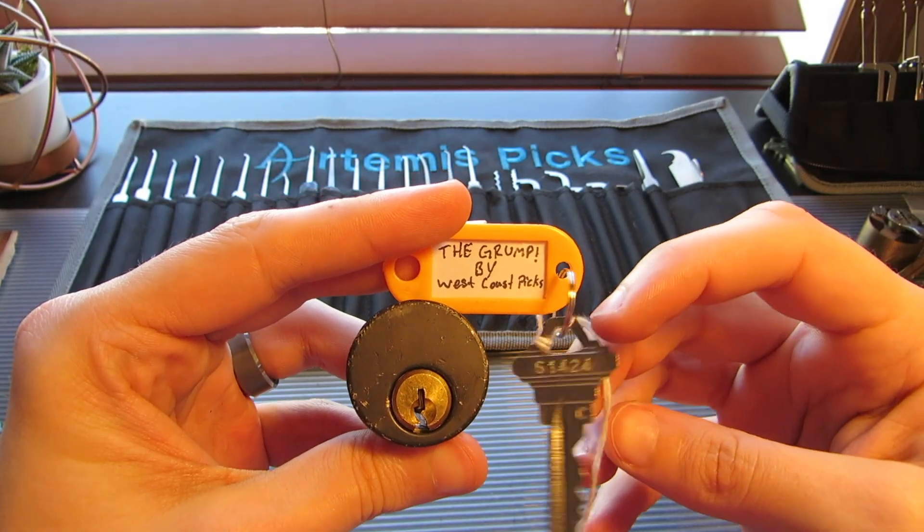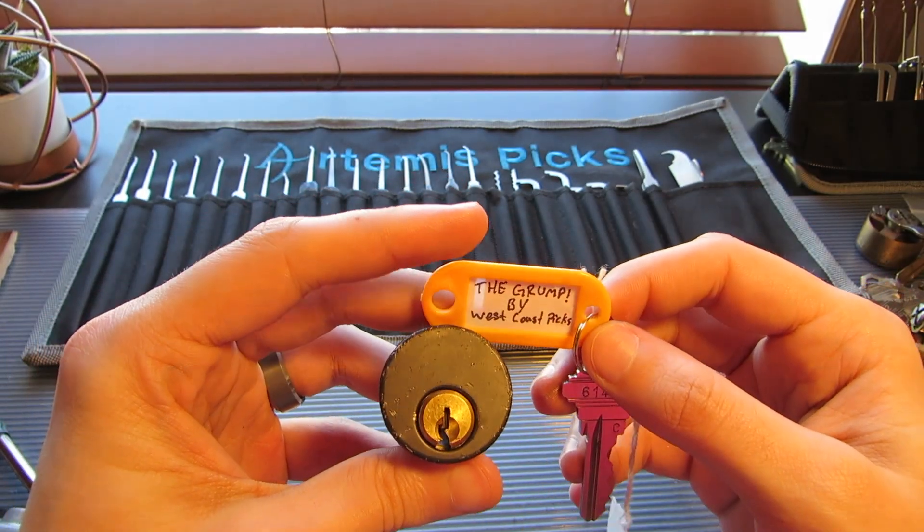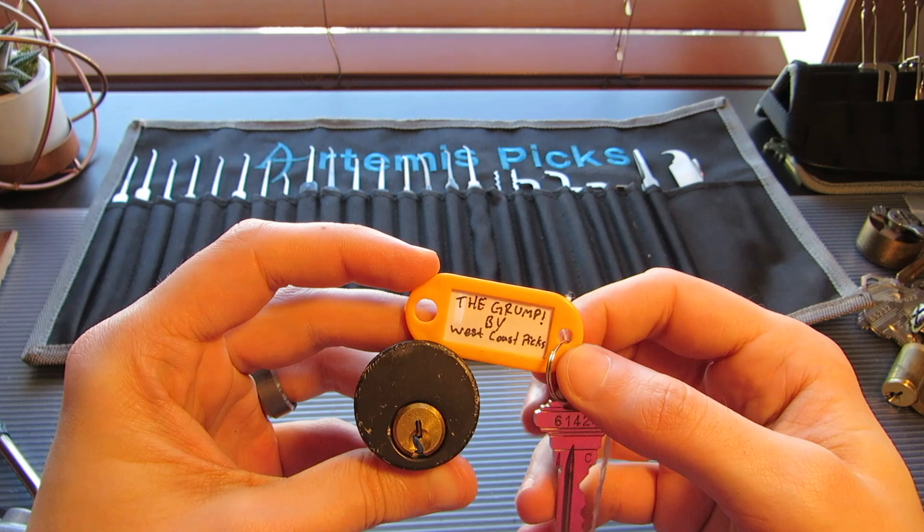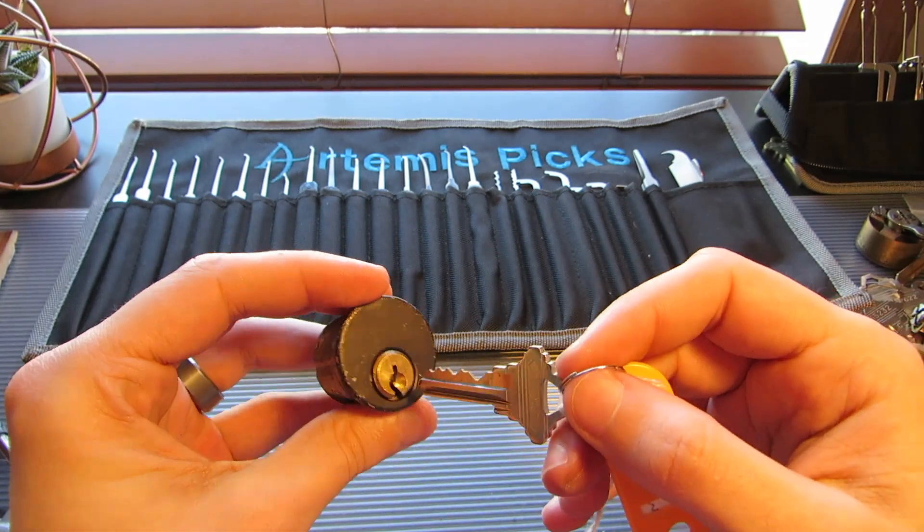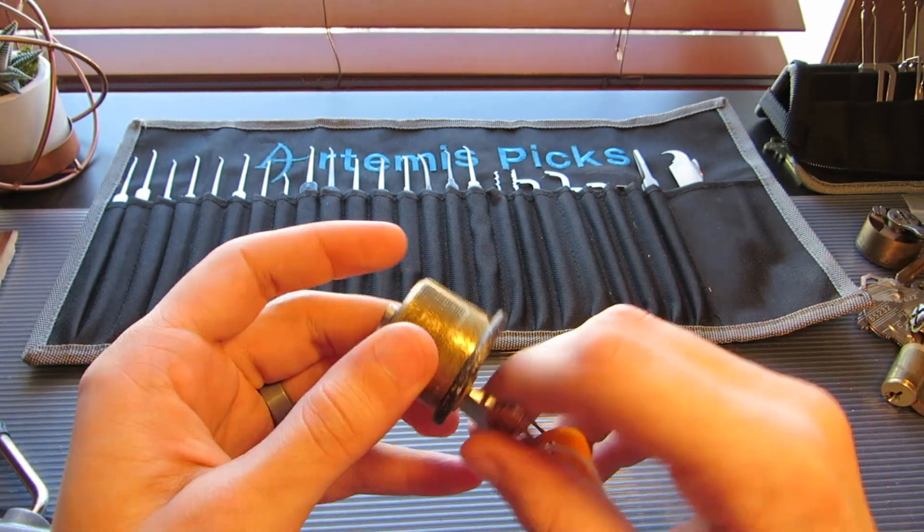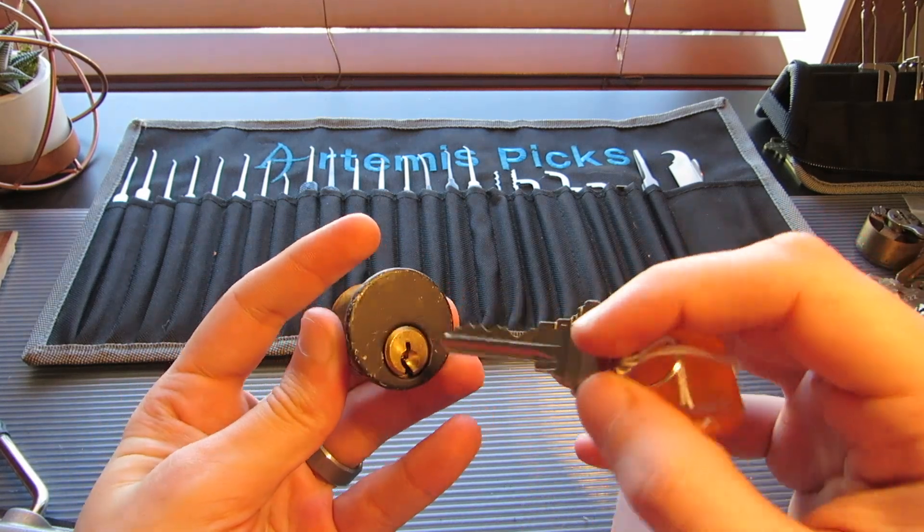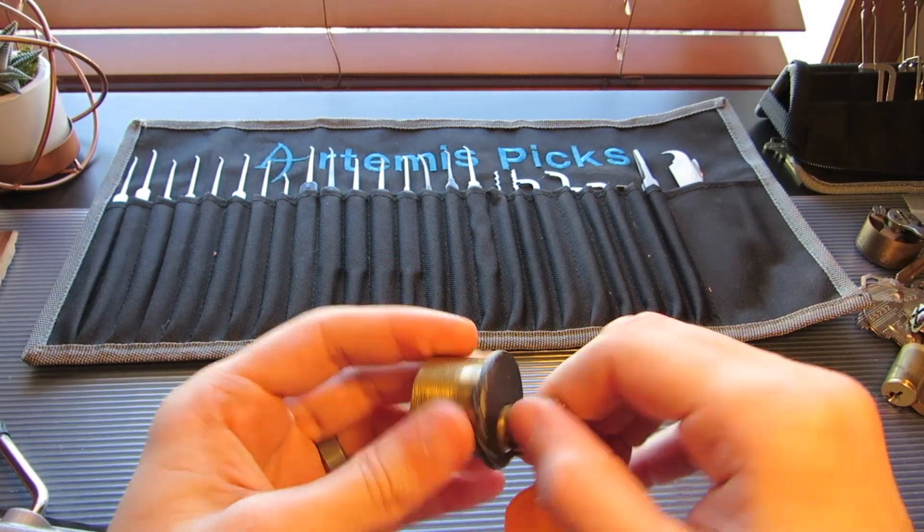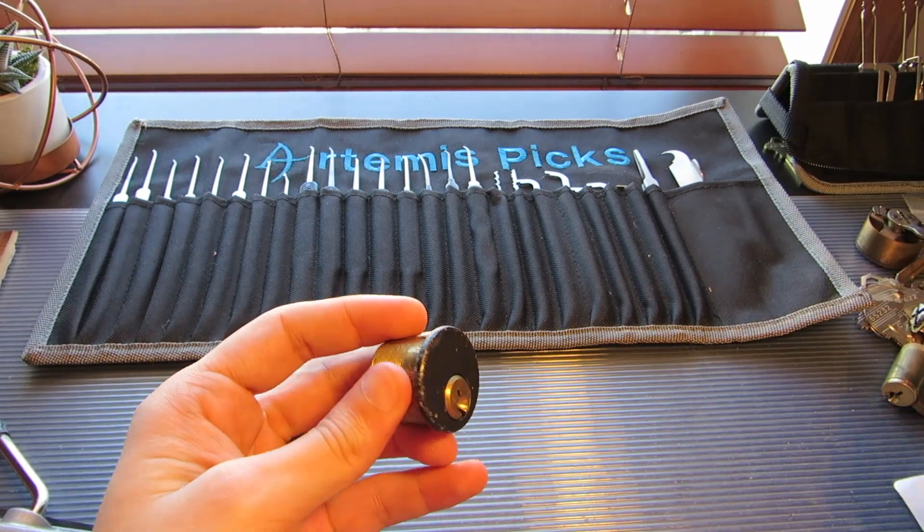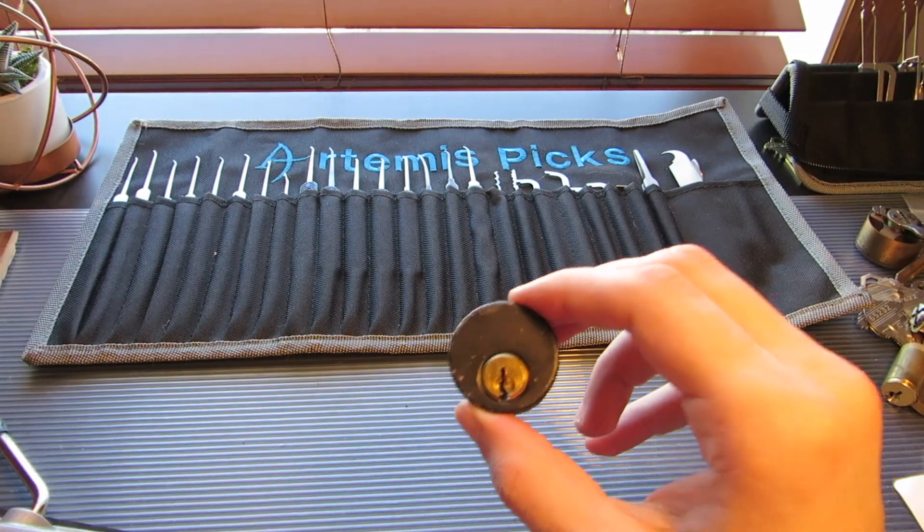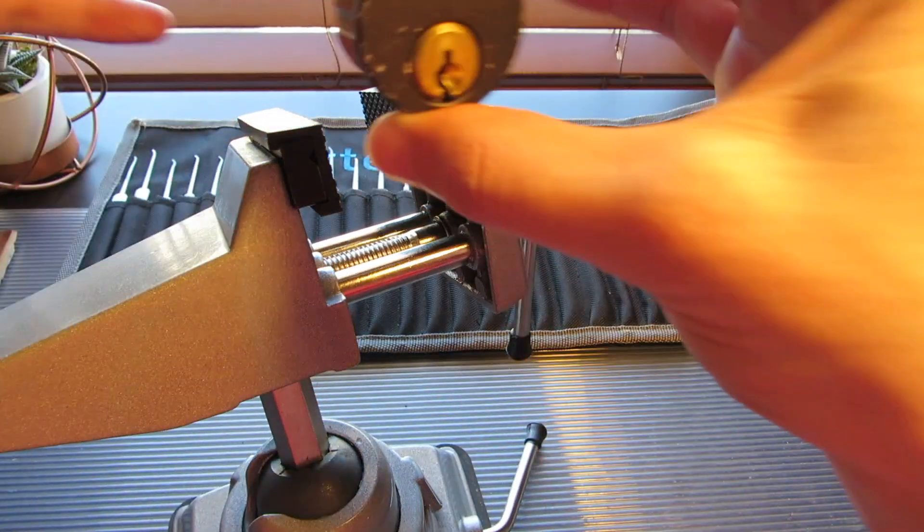Hey everybody, today I've got another one of these mythical beasts made by West Coast Picks. This one is called the Grump. It's in an American lock body with a Schlag C keyway. And knowing West Coast Picks, it's gonna be nasty. So let's see what we can do.